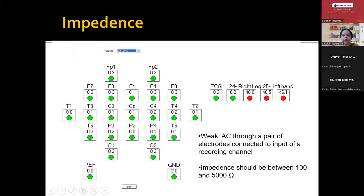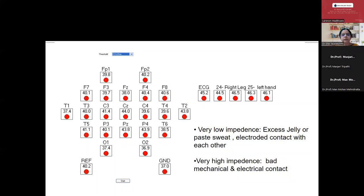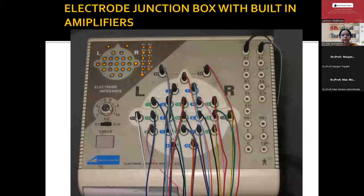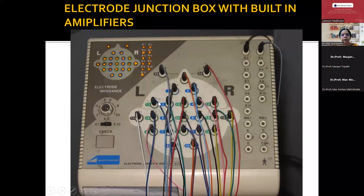Impedance should be between 100 to 5000 ohms. If everything is red, the impedance is not within that range. Low impedance occurs when you apply too much gel, when there is a lot of sweat, or when two electrodes are in contact with each other — no two electrodes should touch. Very high impedance occurs whenever there is bad mechanical or electrical contact. Nowadays we have an amplifier with a built-in head box, where this box contains both the junction box for all electrodes as well as the amplifier.